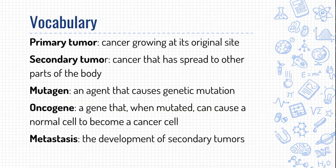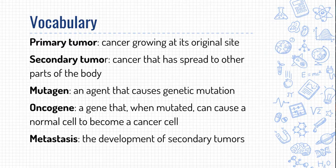In summary, here's some of our vocabulary. A primary tumor is cancer growing at its original site. A secondary tumor is cancer that has spread to other parts of the body. A mutagen is an agent that causes genetic mutation — that could be radiation, a toxic chemical, UV light, or X-rays; anything that can cause a genetic mutation. And an oncogene is a gene that, when mutated, can cause a normal cell to become a cancer cell. Metastasis is the development of secondary tumors.